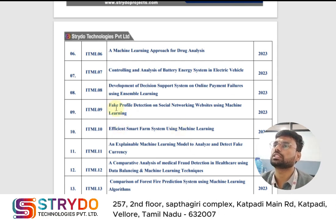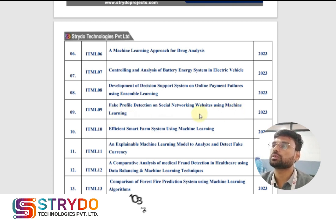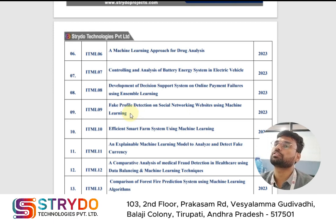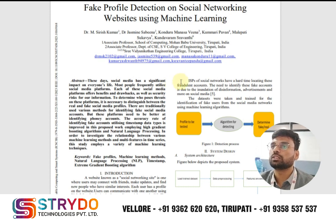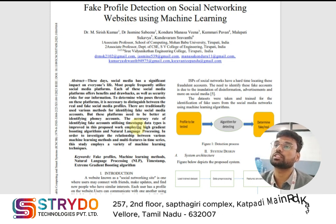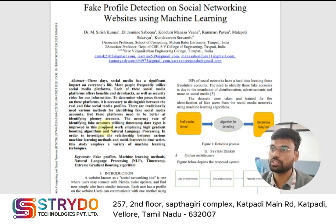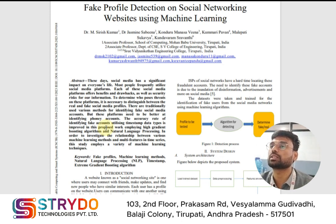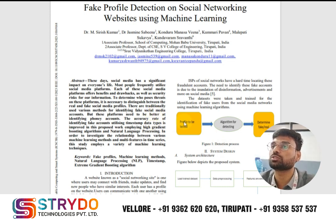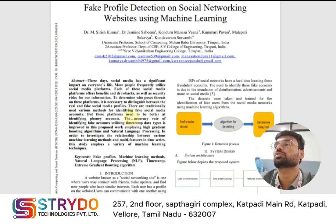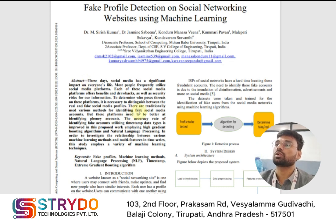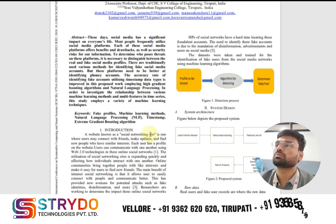Today we are going to see the project: Fake Profile Detection on Social Networking Websites using Machine Learning. The name itself says that by using machine learning we are going to predict whether a profile is fake or real. In social media platforms like Twitter, Facebook, and Instagram, some people create fake profiles to abuse others or do unnecessary things. We need to detect which profile is real and which is fake using machine learning techniques.